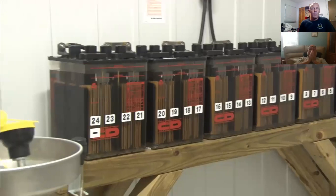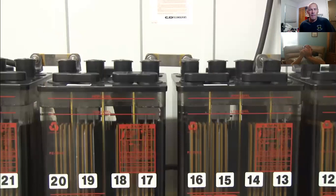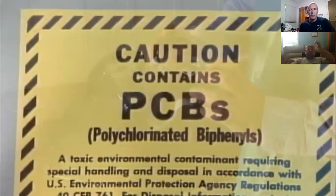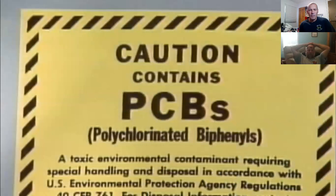Other hazards in substations and switchyards are chemicals, which can include any liquid or gas that can harm you if not handled properly. For example, battery acid is a chemical that can burn your skin and damage your clothing if you don't wear the proper protective gear. PCBs are chemicals that are highly toxic, and you should observe special precautions if there's a chance you could be exposed to PCBs.